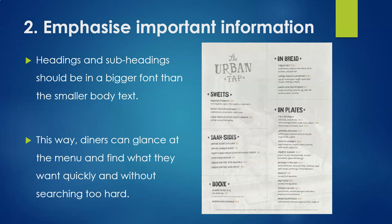Tip number two is to emphasize important information. The way we do that is to make our headings and subheadings bigger and bolder than the body text. When diners come in and read your menu, all they have to do is glance at it. They don't have to read through every single item to find what they want — they just glance and know straight away which section has what they're looking for.